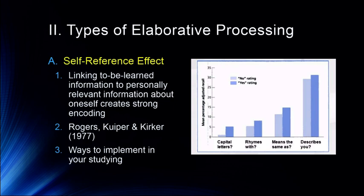The self-reference effect is when we link to-be-learned information to personally relevant information about oneself. This creates a strong type of encoding. There's a really great demonstration by Timothy Bender in Missouri on the self-reference effect that you can actually go online and try — I highly recommend it. When we link to-be-learned information to personally relevant information, it ties us to so many different things.